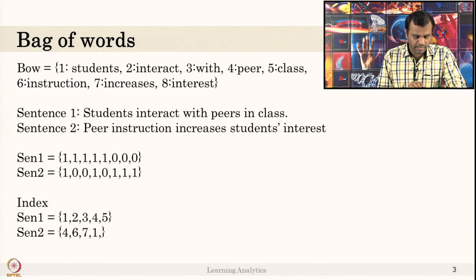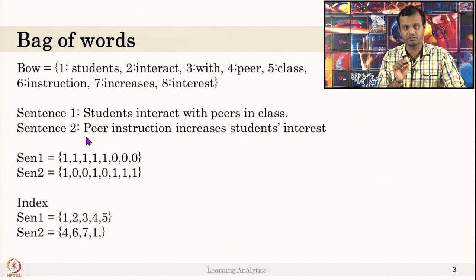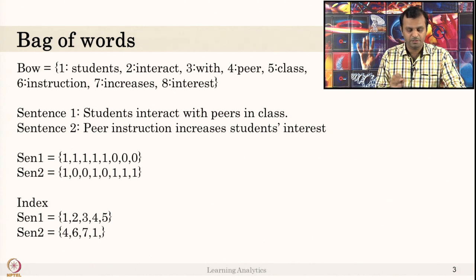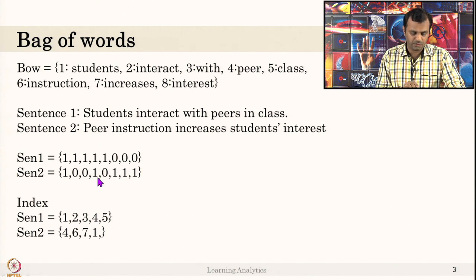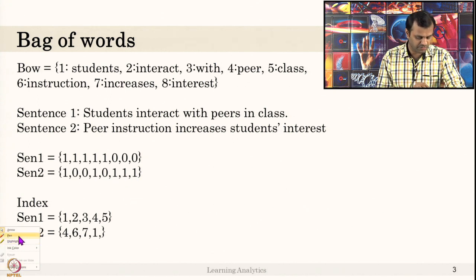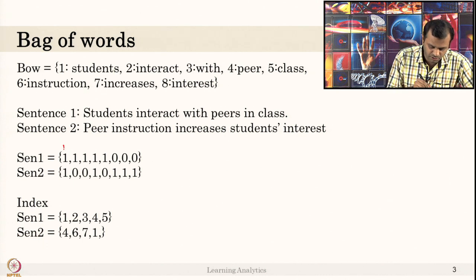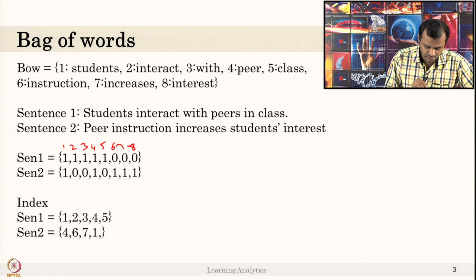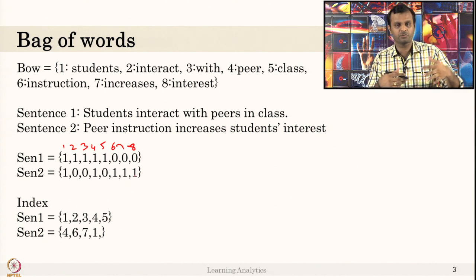For sentence two, 'student' is present — one. 'Interact' is not there — zero. 'With' is not there — zero. 'Peer' is there — one. 'Class' is not there — zero. 'Instruction' and 'increases' are present, so they are marked one. The order of position in the dictionary is what matters in bag of words, not the order the words appear in the sentence.